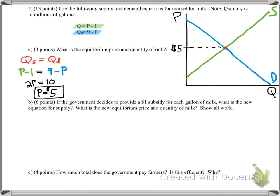So we've figured out that part here. Now we want to know what the quantity demanded is. How much people are willing to buy it for at that price? So you simply plug in the price into the quantity demanded equation, and that would be 9 minus 5, which would be 4. So quantity demanded would be 4. And remember, this is in millions of gallons, so technically it's 4 million gallons. Okay, so now what happens? Let's go to part B.